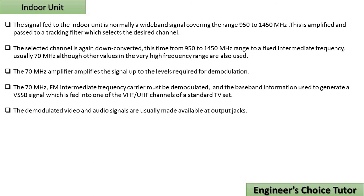A major difference between DBS TV and conventional TV is that with DBS, frequency modulation is used, whereas with conventional TV, amplitude modulation in the form of VSSB is used. I hope everything is clear. Thank you for watching our video — please subscribe the channel and like the video.